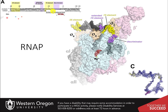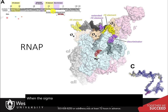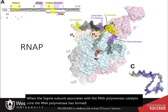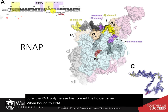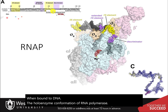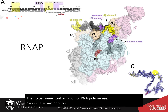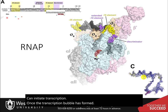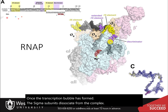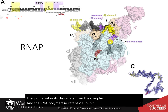When the sigma subunit associates with the RNA polymerase catalytic core, the RNA polymerase has formed the holoenzyme. When bound to DNA, the holoenzyme conformation of RNA polymerase can initiate transcription. Once the transcription bubble has formed, the sigma subunits dissociate from the complex, and the RNA polymerase catalytic subunit continues elongation on its own.